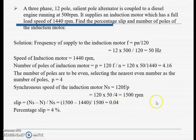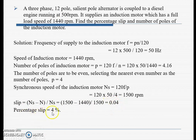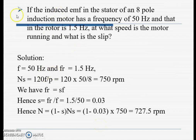The slip is calculated as s = (n_s − n) / n_s = (1500 − 1440) / 1500 = 0.04, which is 4%.